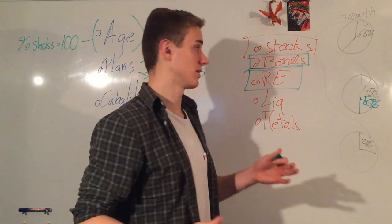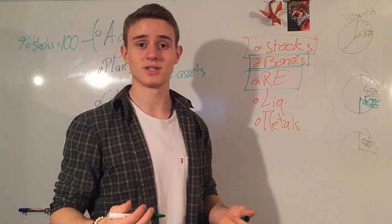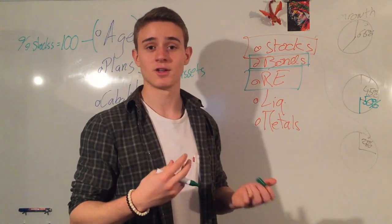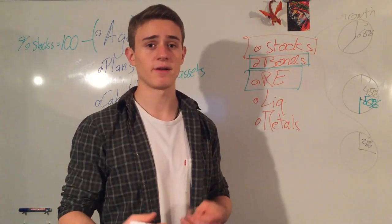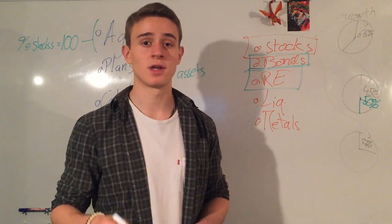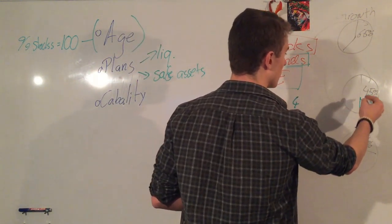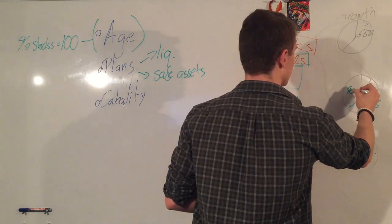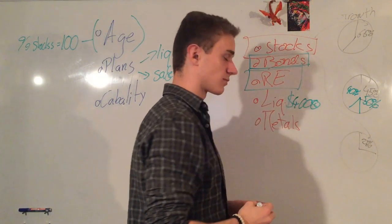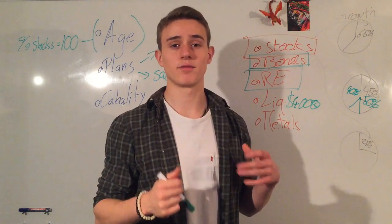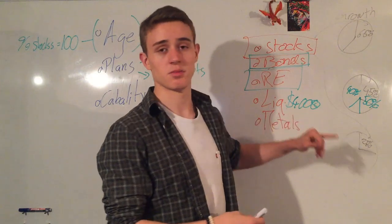Liquidity depends very much on your future plans. Imagine you're going to university in one year but you still want to invest, and university is going to cost $5,000 per year and you want to invest $10,000. Then you're going to need at least 40% liquidity — so $4,000. If you save a thousand over the year you'll have the $4,000, and you hope your investment catches up with inflation.